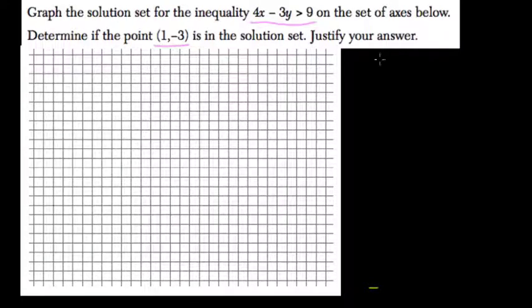Let's first find the point, see if it's in there. It's actually quite easy to do. What you could do is plug the x and y value into your inequality. So we have 4x minus 3y. So 4 times x, or 1, because they give you 1 at this point, minus 3 times y, y is negative 3.